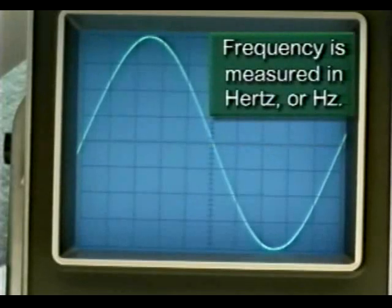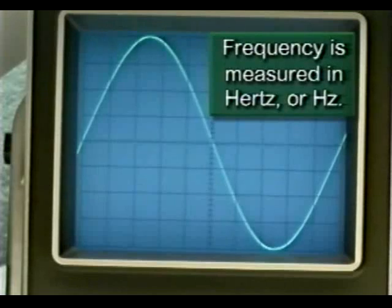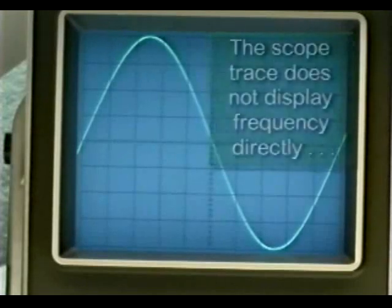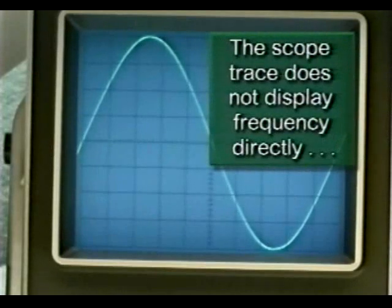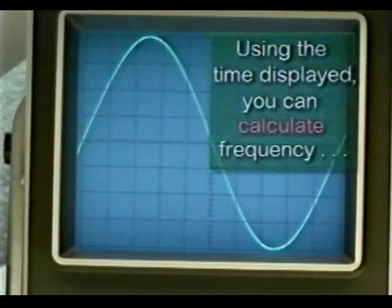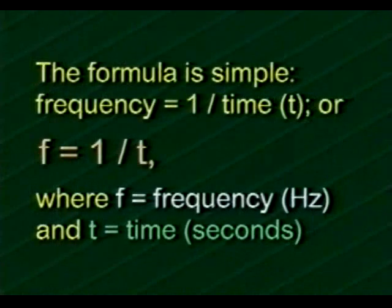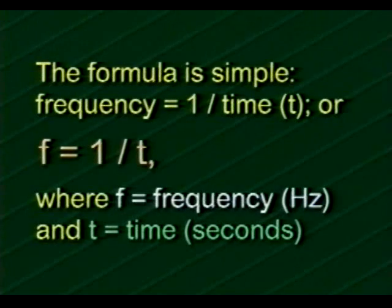Many years ago, frequency was measured in cycles per second, kilocycles per second, or megacycles per second. The unit 'cycles per second' has been replaced by hertz (Hz), though the prefixes kilo, mega, and giga are still used — giving us kilohertz, megahertz, and gigahertz. It's important to understand that the oscilloscope does not display frequency directly, but rather time. Once we know the time necessary to complete one cycle, we can calculate frequency using the formula: frequency equals 1 divided by T.